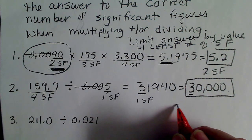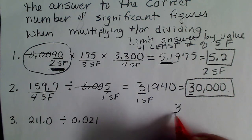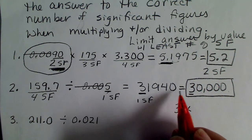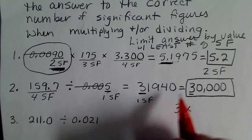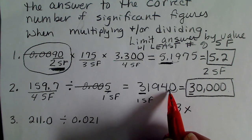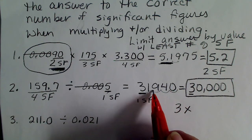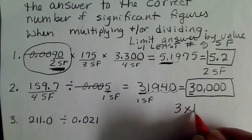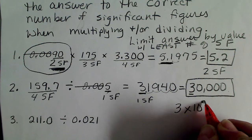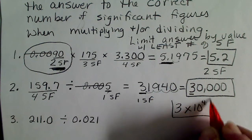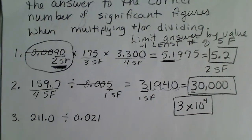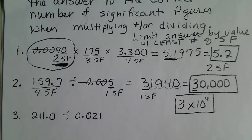Another way to always report that correctly is to put the number in scientific notation. If we move this decimal one, two, three, four places to the left, we have 3 times 10 to the fourth power. Either one of those would be an acceptable answer.